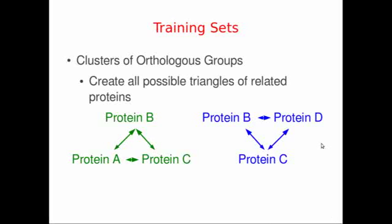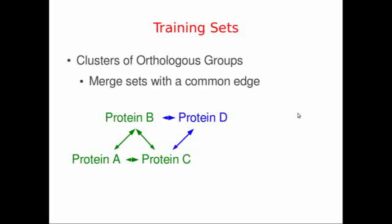In our case, we have three proteins, A, B and C, that are very similar to each other and form a triangle. If we find that B and C are also similar to D, we would then include D in our cluster of orthologous groups because two of the proteins that D is similar to are similar to A. So even if there's no similarity between A and D, we can include them together.